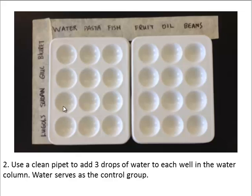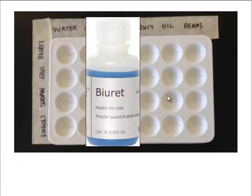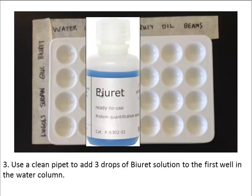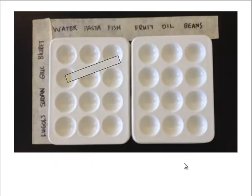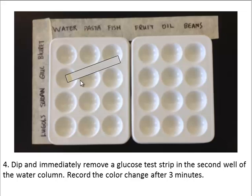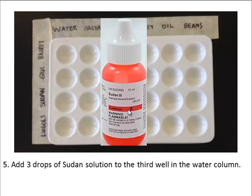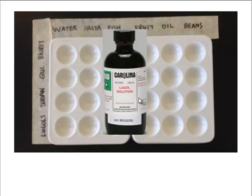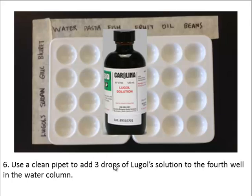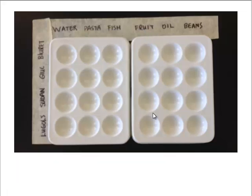That will serve as a great basis for comparison when we test the different foods. Next, use a clean pipette to add three drops of Biuret solution to the first well under the water column to test for protein, and record your results. Then use the glucose test strip in the second well — dip it in quickly and wait three minutes for the color change. Next, use Sudan III in the third well. Please be careful — it's flammable and volatile, so inhaling it is not good for your lungs. Add three drops and record any color changes. Finally, Lugol's solution goes in the fourth well — three drops, then record color changes. Repeat this procedure with each of the remaining foods, filling out your data table as you go.